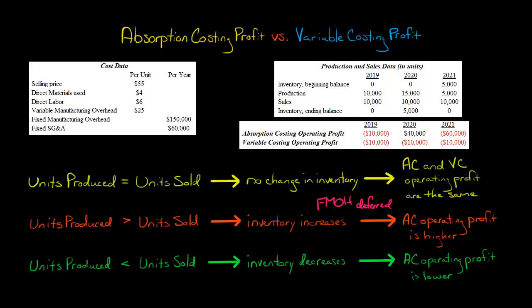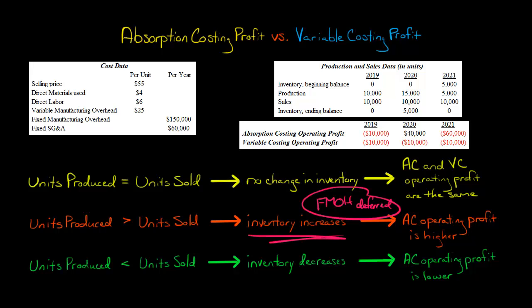So when that happens, with variable costing you just expense all the fixed manufacturing overhead immediately — you treat it as a period cost. But with absorption costing, if you produce more than you sell, you're going to have an inventory buildup, and some of this fixed manufacturing overhead is not going to be expensed this period. It's going to be pushed to the next period, so absorption costing profit would be higher than variable costing profit.